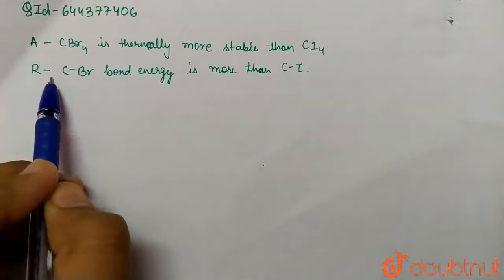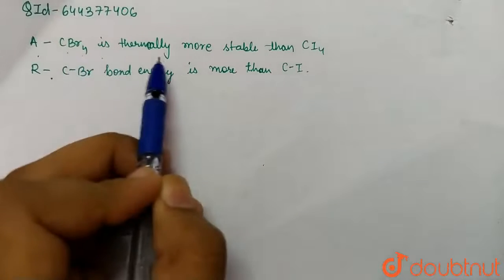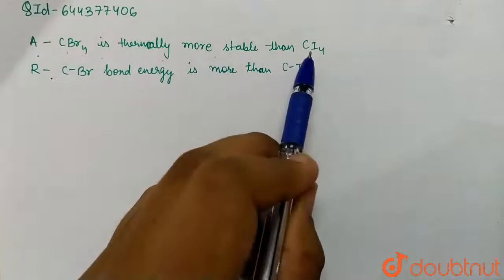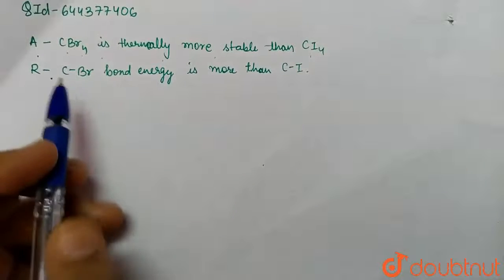Hello students, today's question is an assertion-reason type question. The assertion is CBr4 is thermally more stable than CI4.